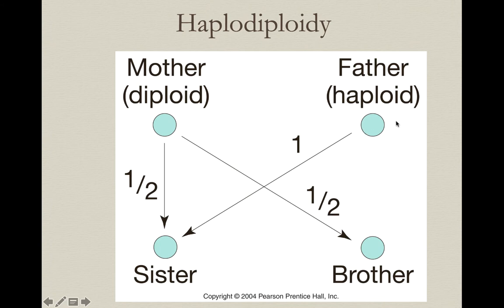Dads, on the other hand, never produce sons. Sons are simply produced by unfertilized haploid eggs. If sperm is ever used to fertilize an egg, it develops into a worker honeybee — or a worker individual in whatever Hymenoptera species we're talking about. Or it could also produce a future reproductive queen.